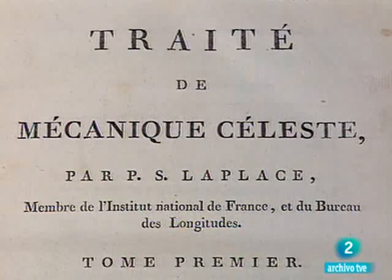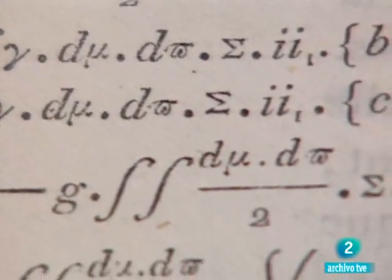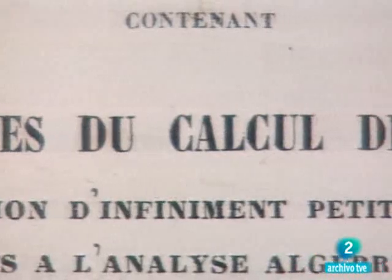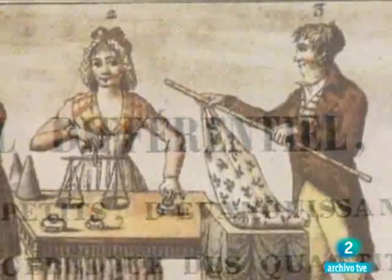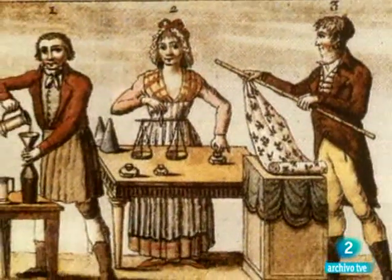Los matemáticos del siglo XVIII recogieron el reto. Los Bernoulli, Euler, D'Alembert, Lagrange y Laplace, entre otros, se lanzaron a completar y explicar el universo newtoniano. La necesidad de organizar las medidas daría origen, en plena revolución francesa, al sistema métrico decimal. Y la comunidad científica se embarcó en el proyecto de medida más ambicioso de la historia: la medida de nuestro propio planeta, es decir, la longitud del meridiano terrestre.